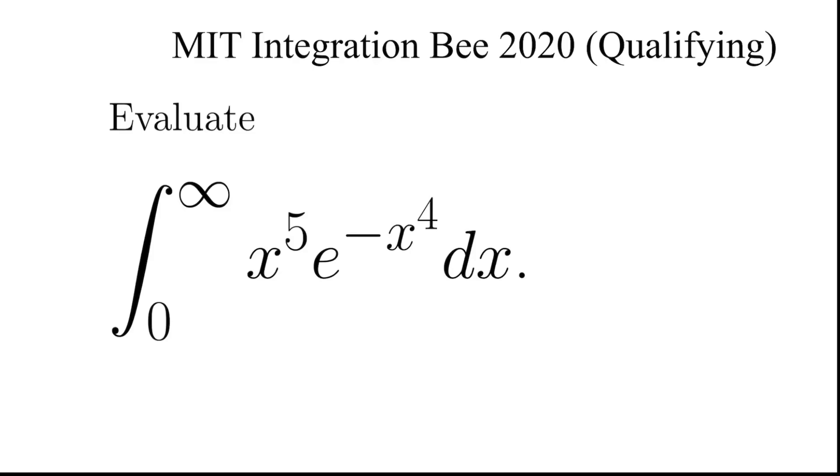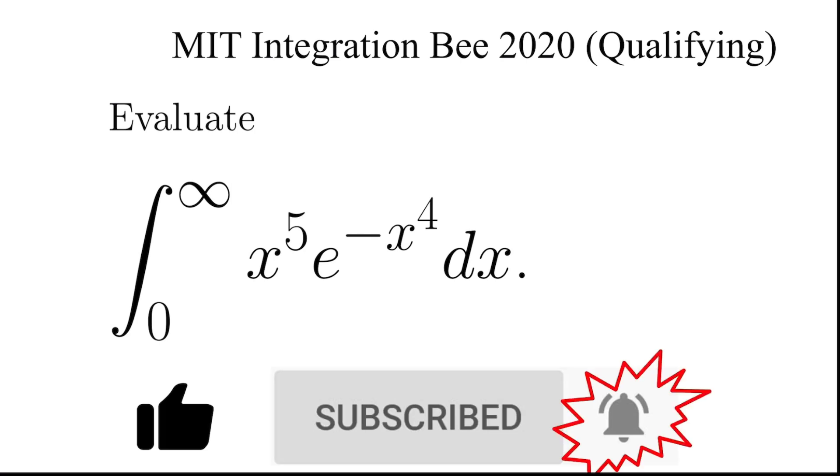In this video, we are going to evaluate this integral taken from the qualifying round of the MIT Integration Bee 2020, to evaluate the integral of x to the 5 times e to the minus x to the 4 dx over x equals 0 to infinity. Before we move on, don't forget to give a like, subscribe to my channel, and turn on post notifications.